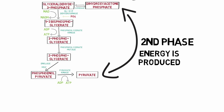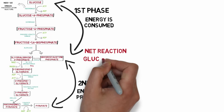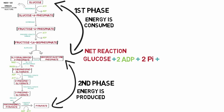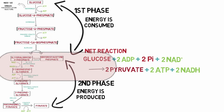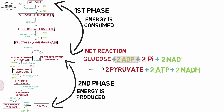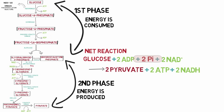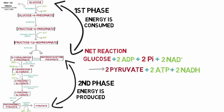Now let's look at the net reaction of glycolysis. One molecule of six-carbon glucose splits into two molecules of the three-carbon compound pyruvate. There is a net production of only two ATPs, since four ATPs are produced in the second phase but two ATPs are consumed in the first phase. Two molecules of inorganic phosphate are utilized, and two NAD⁺ molecules are reduced to NADH during the conversion of glyceraldehyde 3-phosphate to 1,3-bisphosphoglycerate.